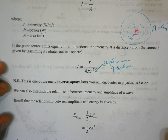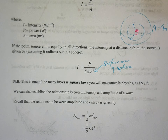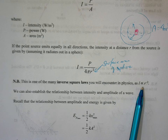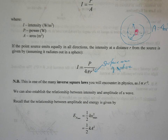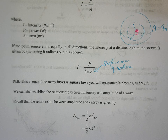This allows us to find the intensity at some distance from the source, assuming it radiates energy in a concentric sphere. You'll notice that intensity is proportional to the inverse of distance squared — this is an inverse square law. We've already seen inverse square laws in this course, most notably the law of universal gravitation, and you'll encounter many more in physics.